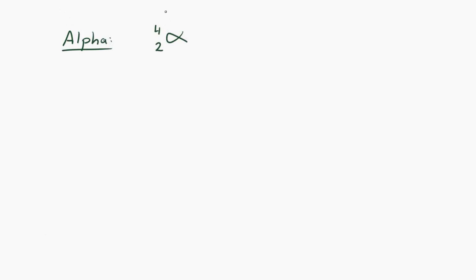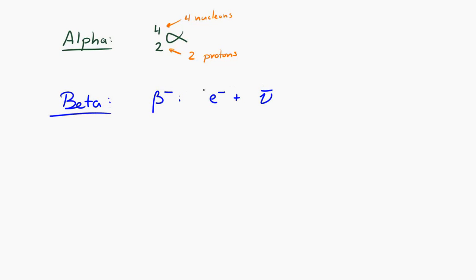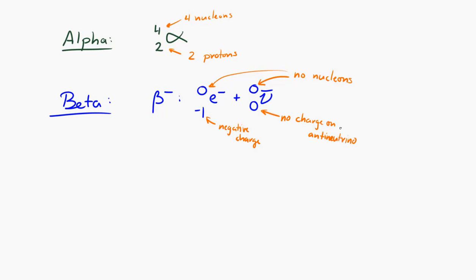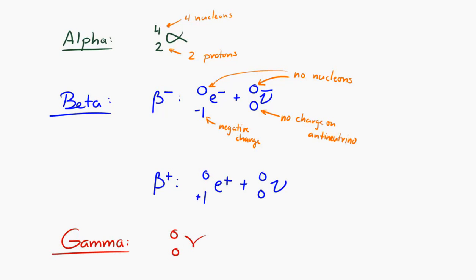For the different types of radiation, we have different nucleon numbers and charge numbers. The alpha particle has a nucleon number of 4 and a charge number of 2. For beta minus, the electron and the antineutrino are not nucleons, so they both have nucleon numbers of 0. The electron has a charge number of negative 1, and the antineutrino has a charge number of 0. For beta plus, the positron has a nucleon number of 0 and a charge number of plus 1, and the neutrino has 0 for both. The gamma ray is a photon with neither charge nor nucleon number, so it's 0, 0.